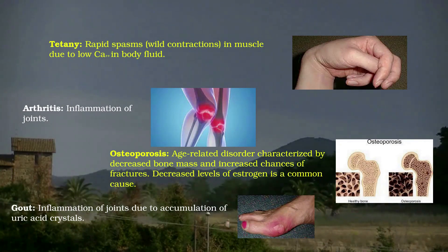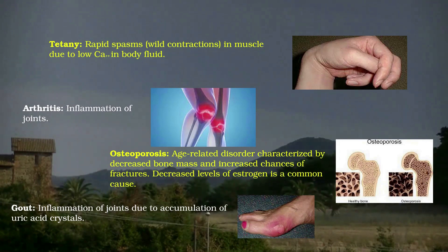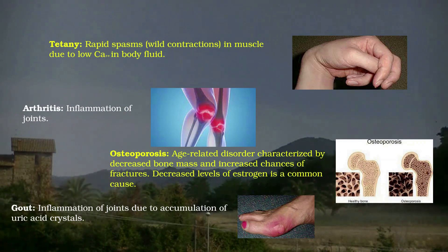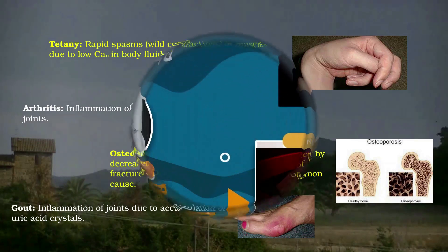2. Arthritis: It is characterized by inflammation of joints. 3. Osteoporosis: It is an age-related disorder characterized by decreased bone mass and increased chances of fractures. Decreased levels of estrogen is a common cause. 4. Gout: It is characterized by inflammation of joints due to accumulation of uric acid crystals.